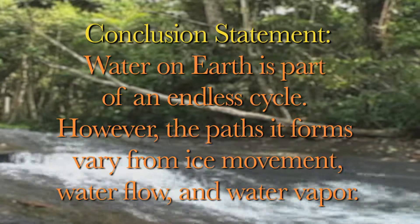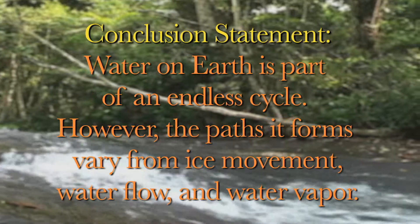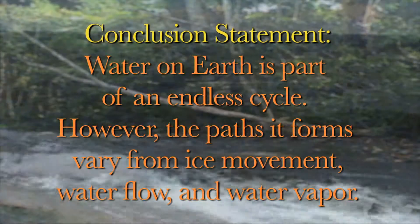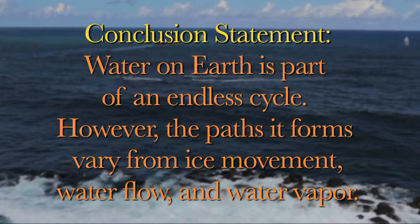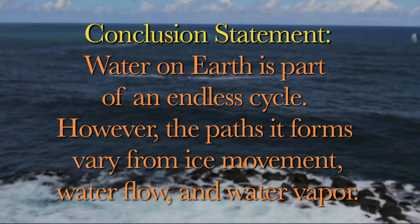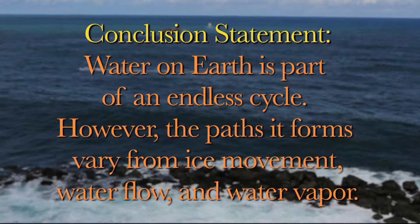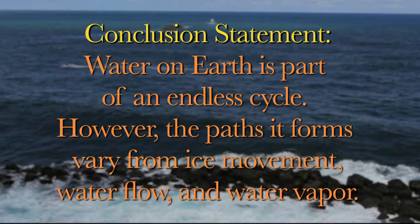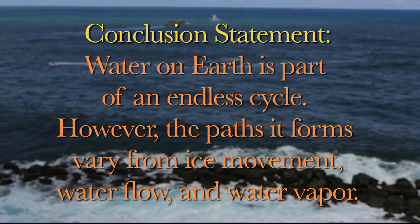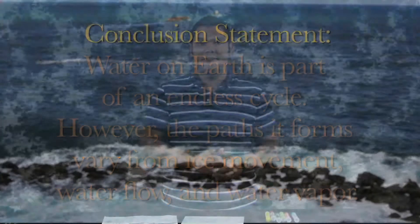The conclusion statement is: water on earth is part of an endless cycle; however, the paths it forms vary from ice movement, water flow, and water vapor.